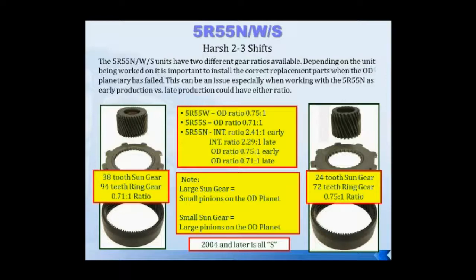If we can't overemphasize anything today, it's making sure you have the right parts in this transmission — it will alleviate 90% of your problems after repairing it. This transmission has selective parts inside. The coast and direct clutch snap rings are available in four different sizes, from 54 thousandths to 96 thousandths — Ford part numbers are provided. Make sure your clutch clearances are correct for good shift quality. Forward clutch snap rings are also available in three different sizes — get those clearances correct as well.